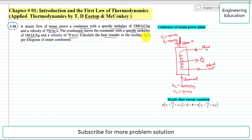Calculate the heat transfer to the cooling fluid per kilogram of steam condensed. First of all, we will write the given data. We have the specific enthalpy of the steam at entering, so h₁ is equal to 2300 kJ per kilogram.